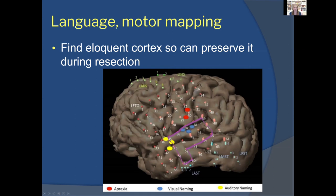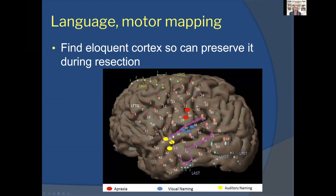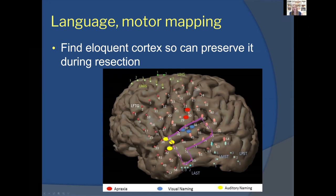In addition to watching seizures to precisely identify onset location, subdural electrodes allow language mapping — you stimulate each electrode on the grid and observe whether it disrupts speech. If stimulating an electrode causes no difficulty speaking, that area is likely not critical for speech. If stimulating an electrode prevents the patient from naming pictured objects — a candle, a fork — then that area is being used for visual or auditory naming and cannot be resected. Subdural grids are therefore valuable for language mapping, motor mapping, and identifying other eloquent cortex.